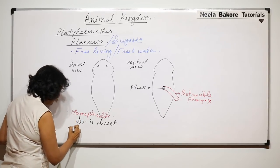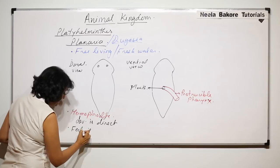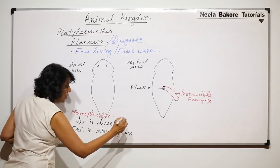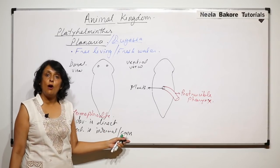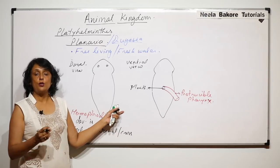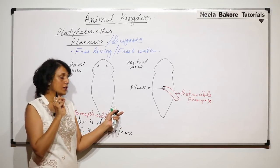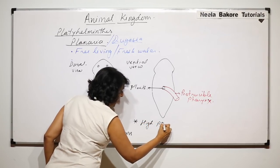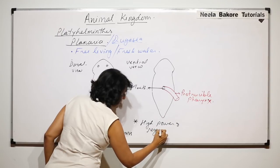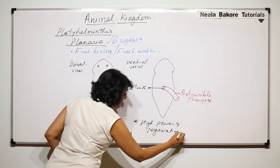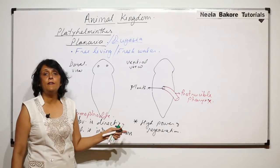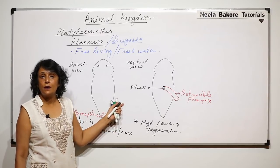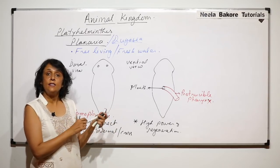They are hermaphrodite but fertilization is internal and cross-fertilization occurs. Cross-fertilization favors genetic recombination. Planaria is also very important for one more specific reason: they have a very high power of regeneration. If the body gets cut into pieces, every piece is capable of giving rise to a new planaria. This is a very interesting feature of planarians, which are free-living organisms.